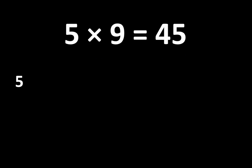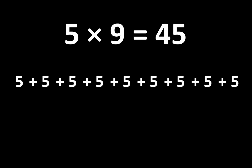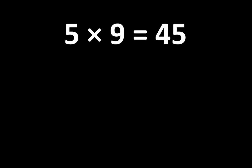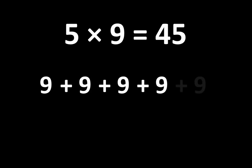5 times 9 equals 45 can also be represented by adding 5 together 9 times: 1, 2, 3, 4, 5, 6, 7, 8, 9. And so we can also add the 9 together 5 times: 1, 2, 3, 4, 5.